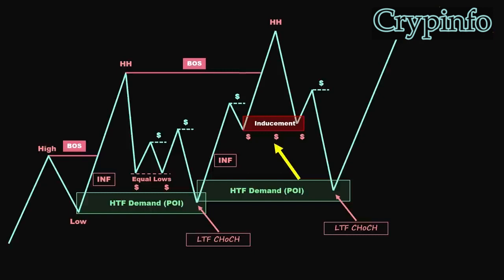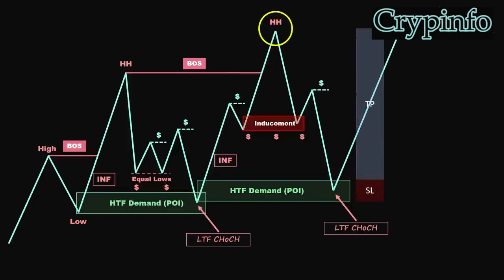Indeed, the price successfully swept the liquidity behind the inducement zone, confirming the anticipated confluence. Our next step is to monitor the price as it enters the higher time frame demand zone. Once the price action is pulled into the higher time frame point of interest, we shift our focus to the lower time frame, searching for a change of character. We then identify a new point of interest — in this case a demand zone on the lower time frame. When these conditions align, we consider a long opportunity, with our target set at the external liquidity serving as the take-profit level.